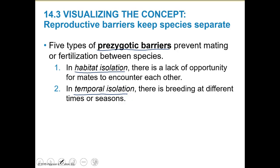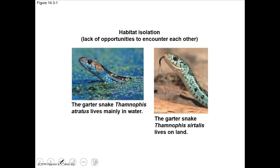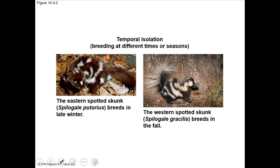We also have temporal isolation, based on seasons or time. They breed at different times. If a certain animal goes into heat in spring and another goes into heat in fall, they're never going to reproduce because they're in different seasons. For example, here's a habitat isolation example: one garter snake lives mainly in water, the other on land — they're closely related but never in the same habitat. And two closely related skunks where one breeds in late winter and the other in fall — they won't mate no matter how closely related.